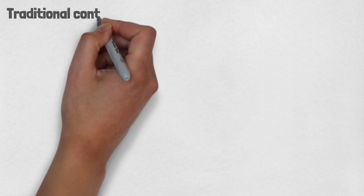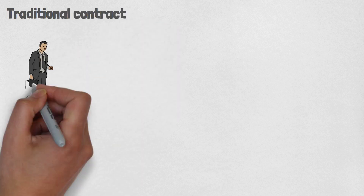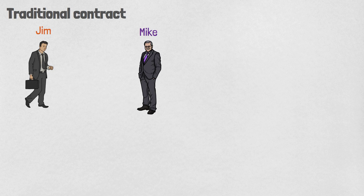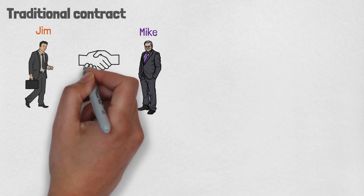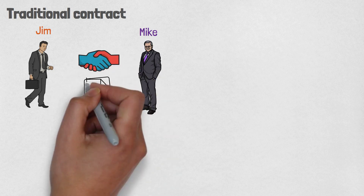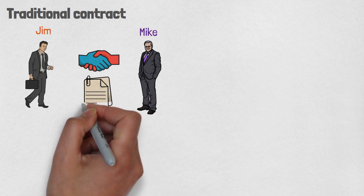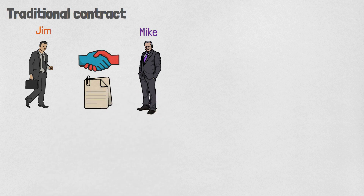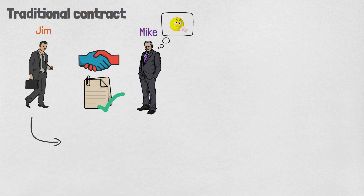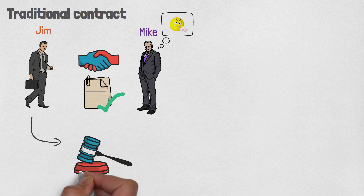To understand smart contracts, let's start with traditional contracts. We have two businessmen, let's call them Jim and Mike. Jim and Mike want to reach an agreement, so they sign a contract to make sure one side doesn't cheat on the other. This contract is then certified by an official, such as a notary public, and the trust that the contract is valid is left to that third party. If Mike violates the agreement, Jim will complain to the responsible party, usually the court, and at best, he will be able to prove after a long time that Mike indeed violated the agreement.